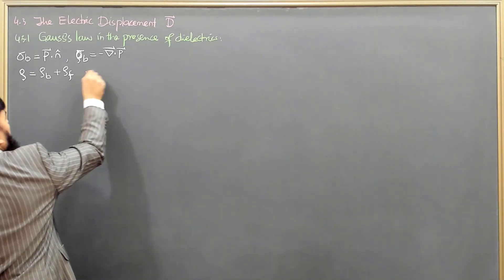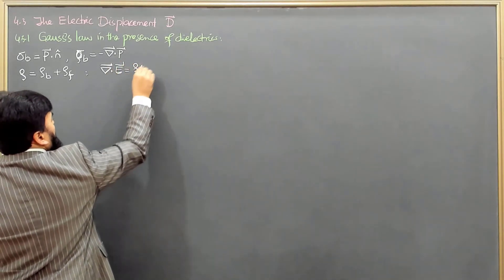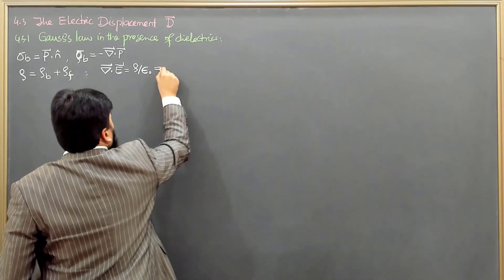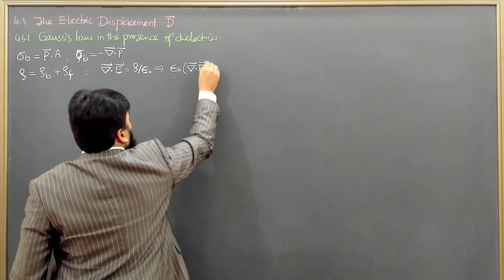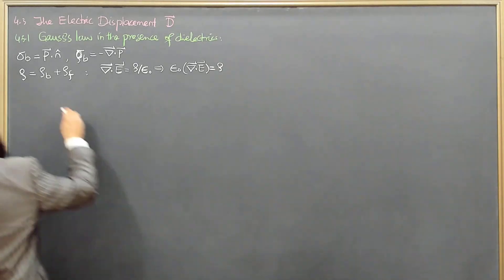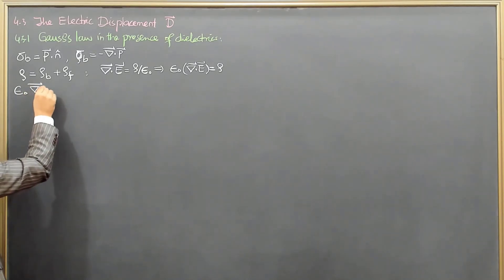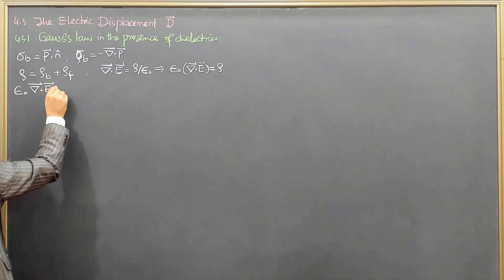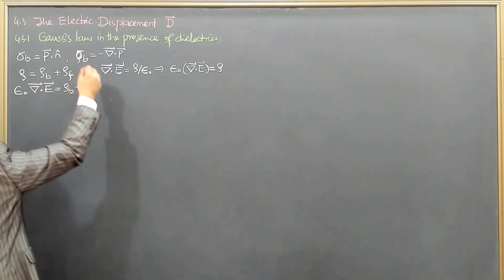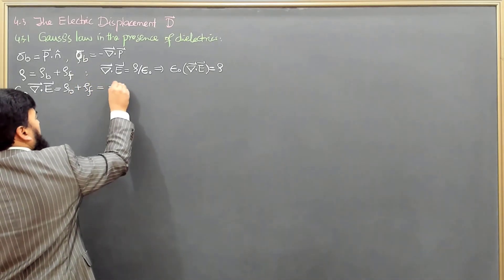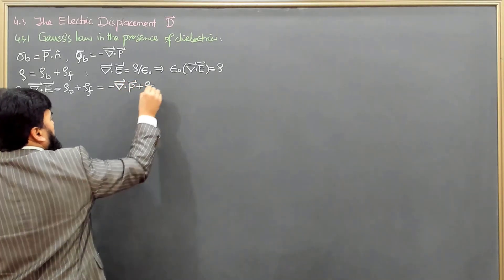Whatever the reason, the charge density ρ used in Gauss's law can be written as the sum of bound charge and free charge. We know Gauss's law in differential form: ∇ · E = ρ/ε₀, so ε₀ ∇ · E = ρ. Further, ε₀ ∇ · E = ρ_b + ρ_f. Substituting ρ_b = -∇ · P, we get ∇ · (ε₀E) = -∇ · P + ρ_f.